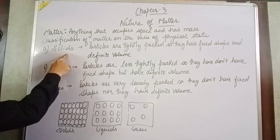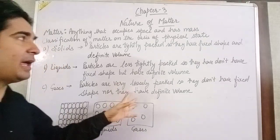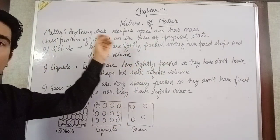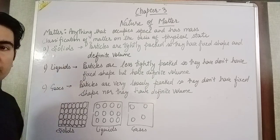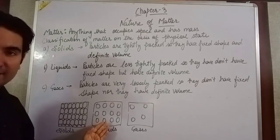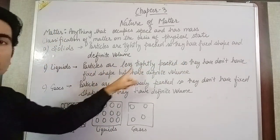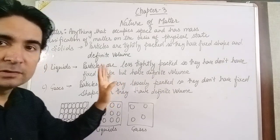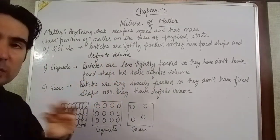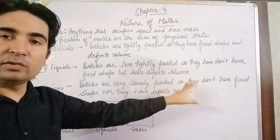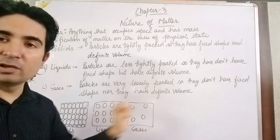In solids, the particles are very tightly packed, so solids have a fixed shape and a definite volume. In liquids, the particles are less tightly packed, so they don't have a fixed shape but have a definite volume. Third, gases — particles are very loosely packed, so they don't have a fixed shape nor a definite volume.